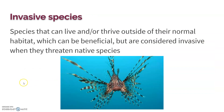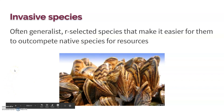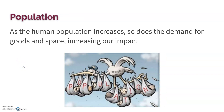Invasive species are those able to thrive outside their normal habitat. If they threaten native species — eating their food source or taking their nesting sites — they're considered invasive. They're typically generalist and r-selected species: generalist means they can live in many environments, and r-selected means they're small and reproduce quickly. These factors make it easier for them to outcompete native species.